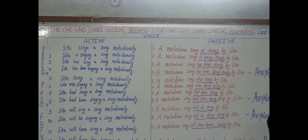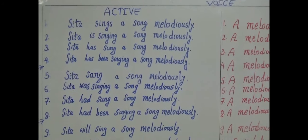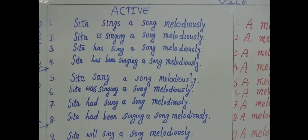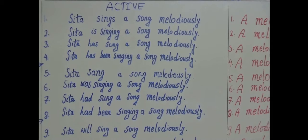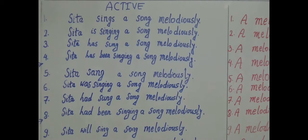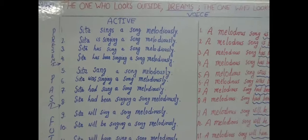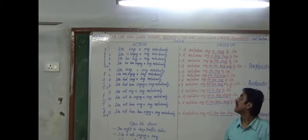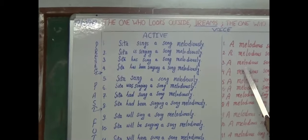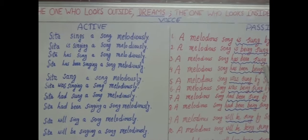Now we talk about present perfect. The auxiliaries are 'has' or 'have.' I, we, you, they carry 'have.' He, she, it carry 'has.' Ram takes 'has.' Mohan and I — 'have.' Sita and Sita — 'have.' 'Sita has sung a song' becomes 'a song has been sung by Sita.'